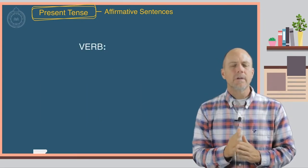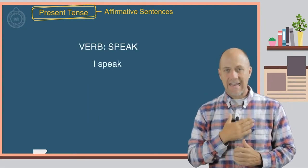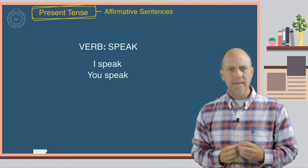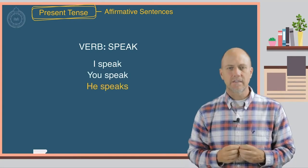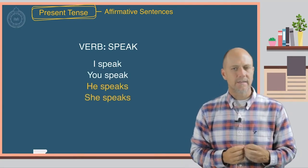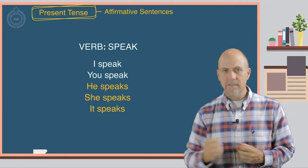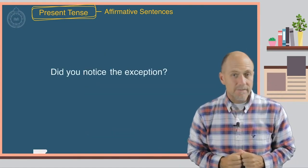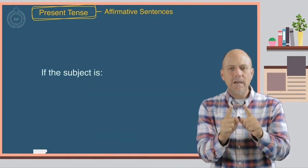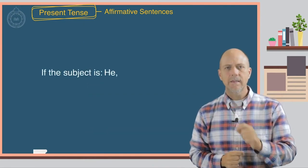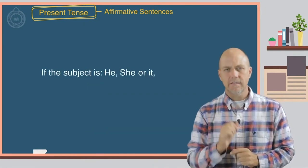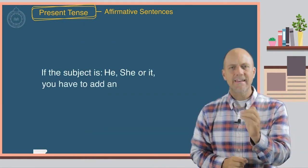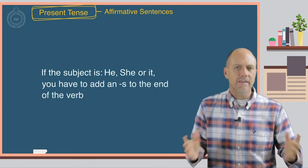Let's look at some examples. For example, the verb speak. I speak. You speak. He speaks. She speaks. It speaks. We speak. They speak. Did you notice the exception? If the subject is he, she, or it, you have to add an S to the end of the verb.